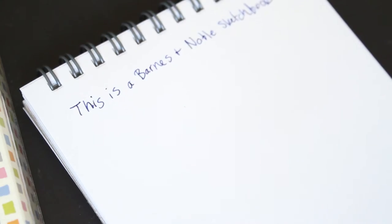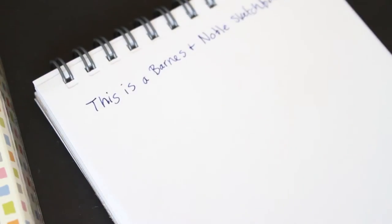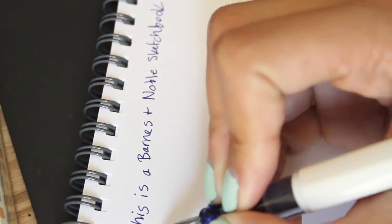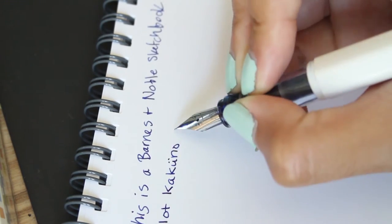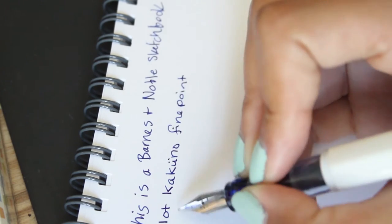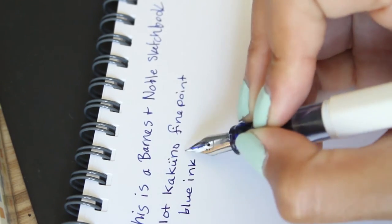Here I'm testing out the pen on a Barnes and Noble sketchpad. I don't know the specific name of it, it just says sketchbook on it. And it's actually a very ink-friendly sketchbook to my amazement. Make sure to give the ink a couple seconds to dry because it is water-based and it will smudge.